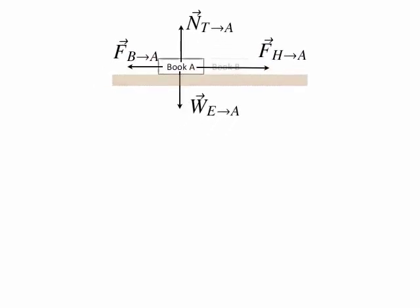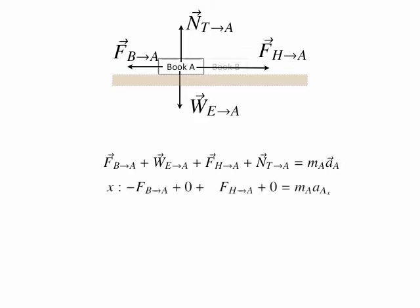Now let's focus on the free body diagram for book A and write out Newton's second law in vector form. Newton's second law says the sum of all forces acting on book A is equal to the mass of book A times the acceleration of book A. So it's the sum of all four force vectors equal to m_A times a_A. Now I want to break that vector equation down into two component equations: the x component and the y component.